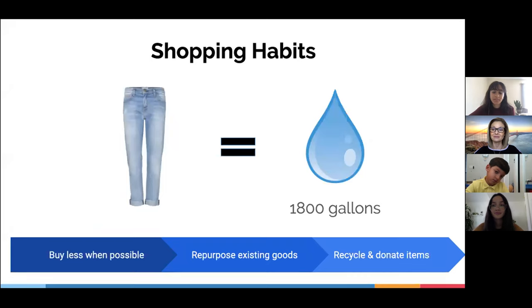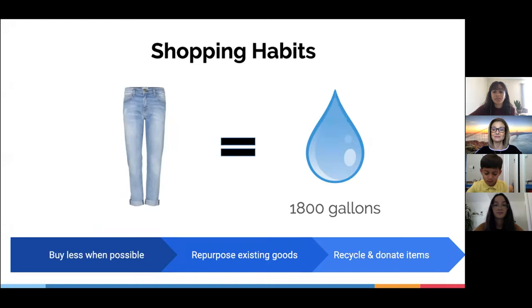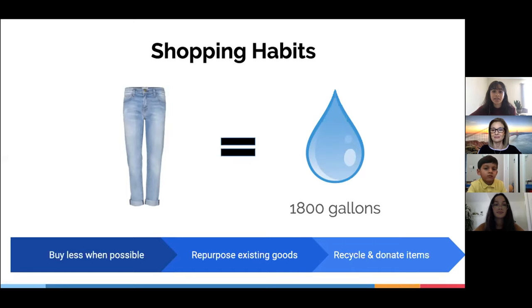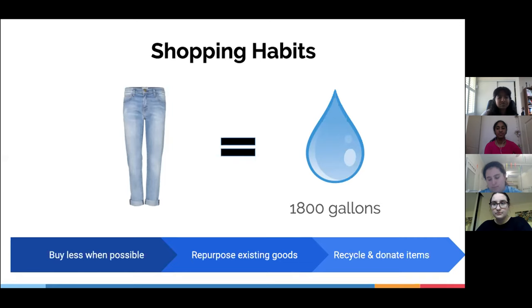We can also conserve water by keeping track of our shopping habits. A majority of consumer goods require large amounts of water for production as well as distribution. We need to pause and think before we buy a product — really ask ourselves whether we need that new pair of shoes, an upgraded phone, or an extra pair of jeans. It's worth noting that it takes nearly 1,800 gallons of water to produce the cotton in a single pair of jeans. Buying less, repurposing and reusing existing supplies, recycling as much as possible, and donating goods we no longer need are all great ways to conserve water.